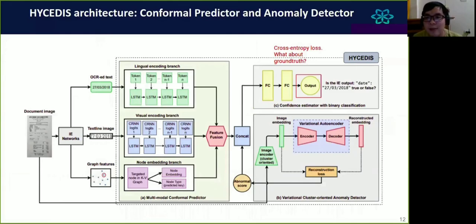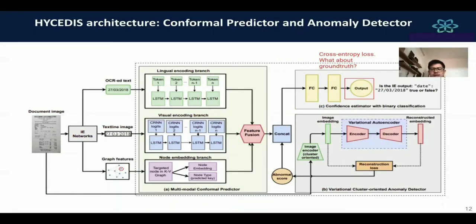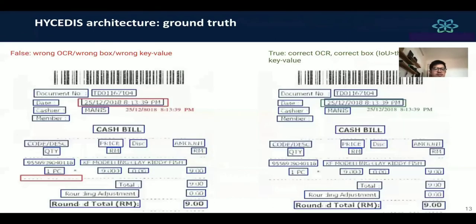After we have feature fusion and abnormal score, we will concatenate them into a single feature and feed forward to two fully connected layers to produce the final output. In our output, we will use cross-entropy loss to calculate the final result. And how about the ground truth? We will annotate the ground truth as follows. First, the blue box represents the ground truth bounding box for text line. In the left figure, red boxes are predicted boxes by the document intelligence system. If its location matches any ground truth box and OCR text is wrong, we will consider it as wrong. We label this status as 0 or false. Another case is when a predicted box doesn't match any ground truth.